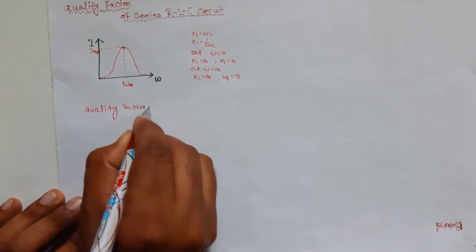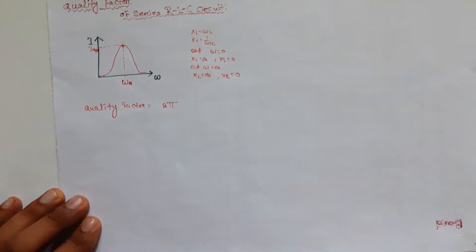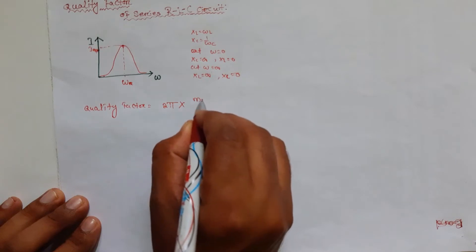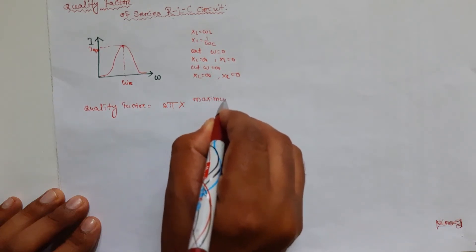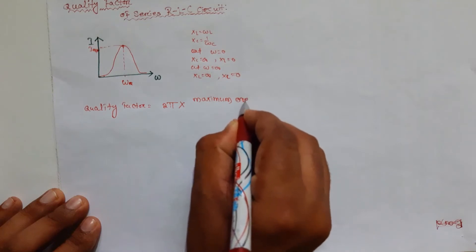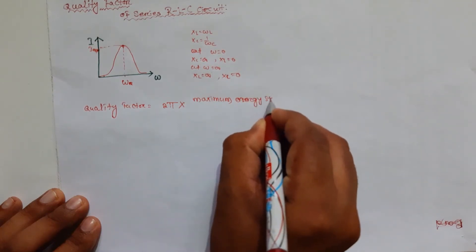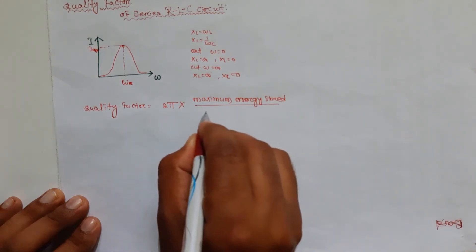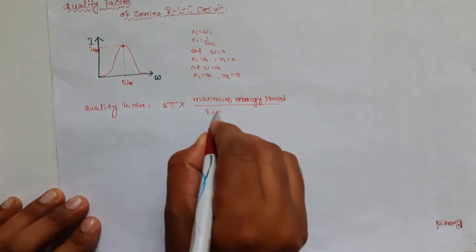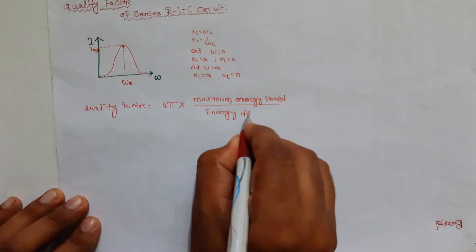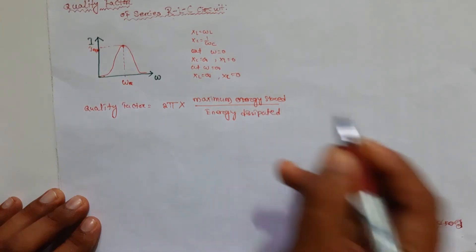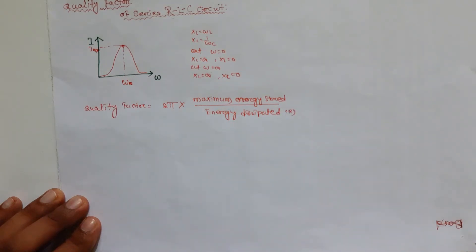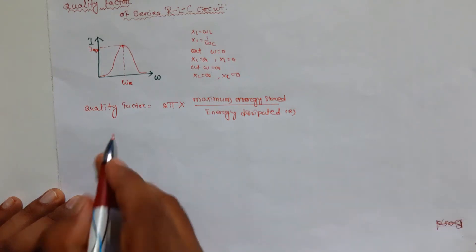Quality factor Q is defined as 2π times the maximum energy stored — in the inductor or the capacitor — divided by the energy dissipated in the RLC circuit, which is only in the resistor.